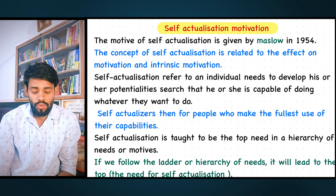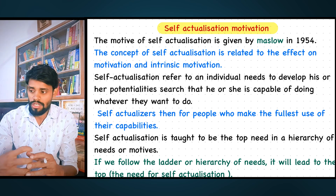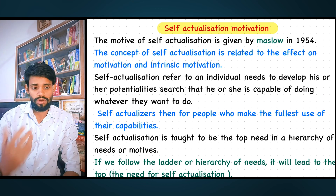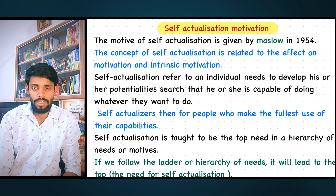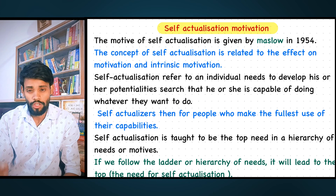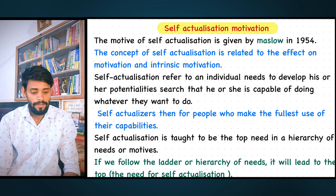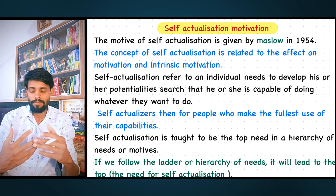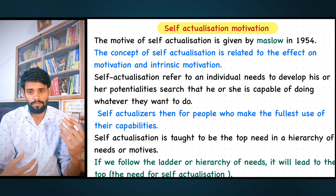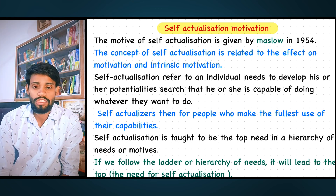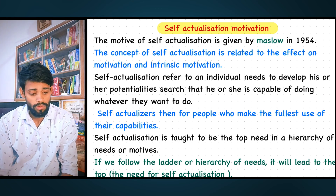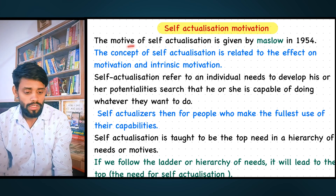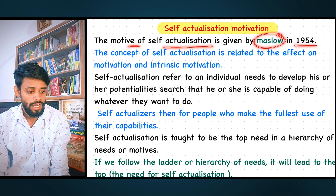In 1954, Maslow gave a basic theory which has a higher level in the shape of a ladder or triangle. This theory addresses what requirements human beings have, from the lowest level up to self-actualization at the very top. This motive of self-actualization was given by Maslow in 1954.